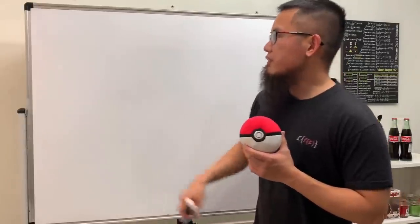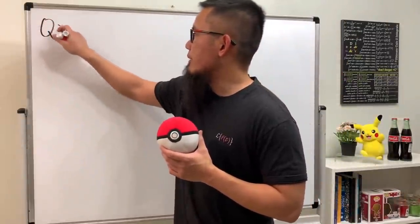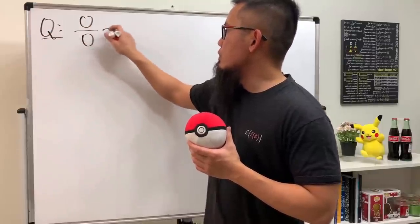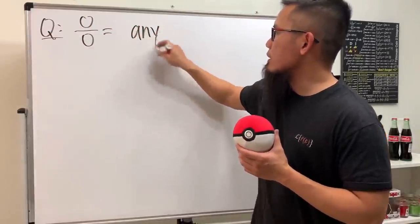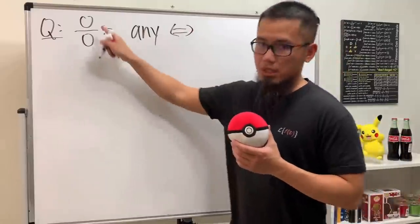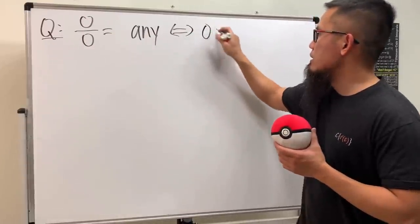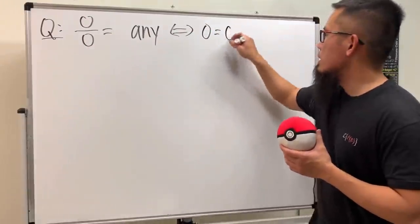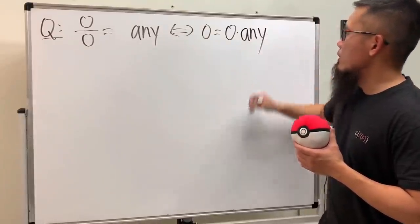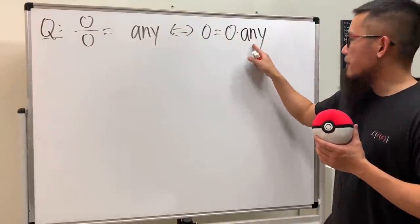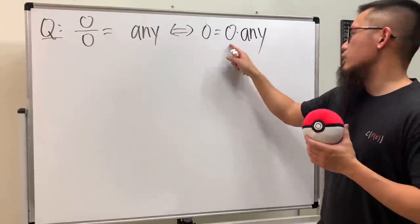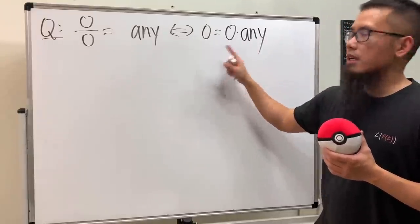I think one of the first things that people will tell you is that zero over zero is just equal to any number that you want. Why? Well because if you look at zero, this is equal to zero times anything.